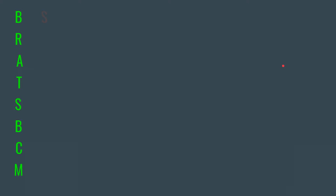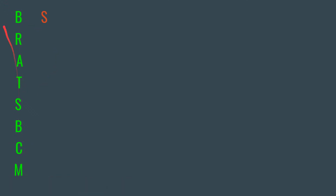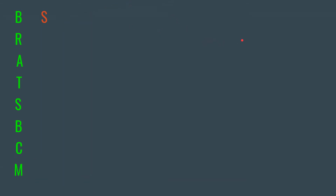Once again, we have Bratz become Sutters, with BCM being 'become.' You're going to write it this way on your memorization sheet: Bratz become Sutters. Your letters are going to be S-U-D-R-R-R-S-S. You have to stretch your mind a little bit to do this, but if you write this down over and over on your sheet, it will be burned into your memory.